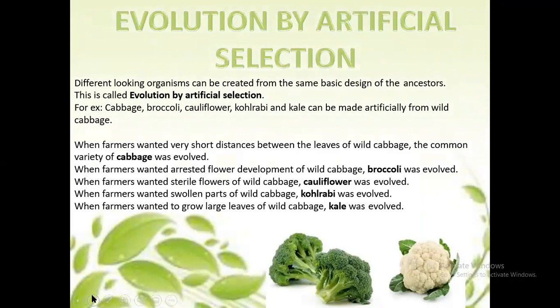Evolution by artificial selection. Different-looking organisms can be created from the same basic design of ancestors — this is known as evolution by artificial selection. For example, cabbage, broccoli, cauliflower, kohlrabi, and kale can be modified artificially from wild cabbage. When farmers wanted very short distances between the leaves of wild cabbage, the common cabbage variety evolved. When farmers wanted arrested flower development, broccoli resulted. When farmers wanted sterile flowers, cauliflower resulted. When farmers wanted the swollen stem of wild cabbage, kohlrabi evolved. When farmers wanted large leaves, kale resulted.